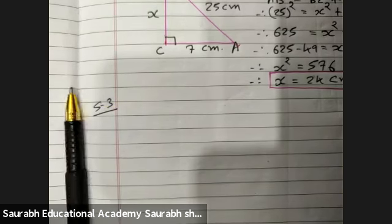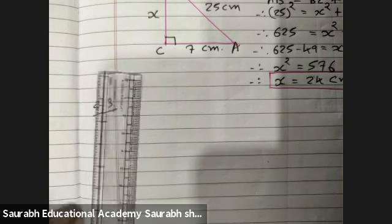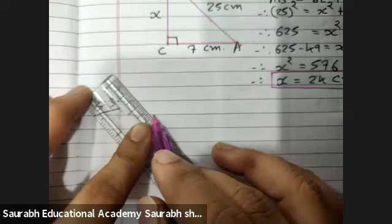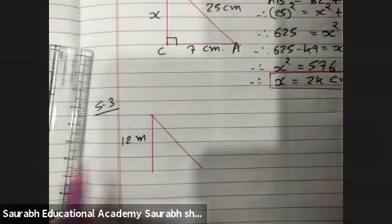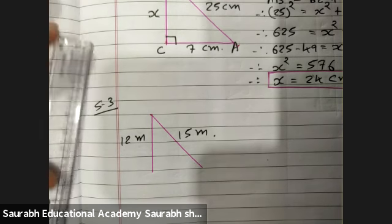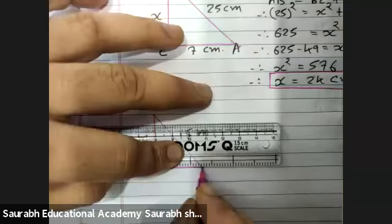A 15 meter long ladder reaches a window 12 meters high. The ladder is set against the wall. Find the distance from the ground between the ladder and wall.